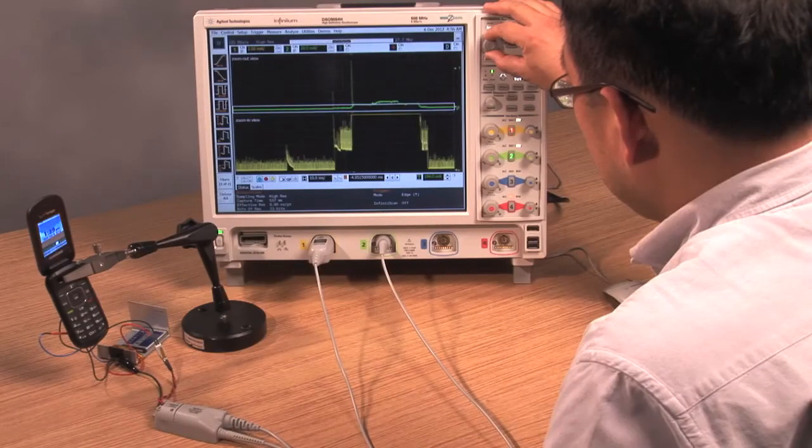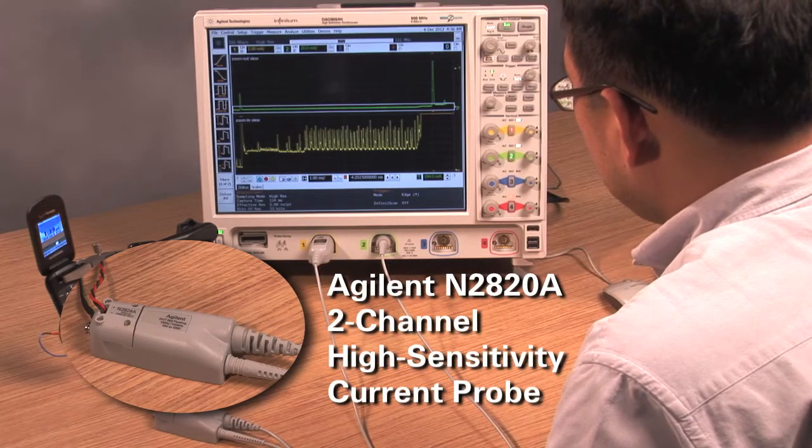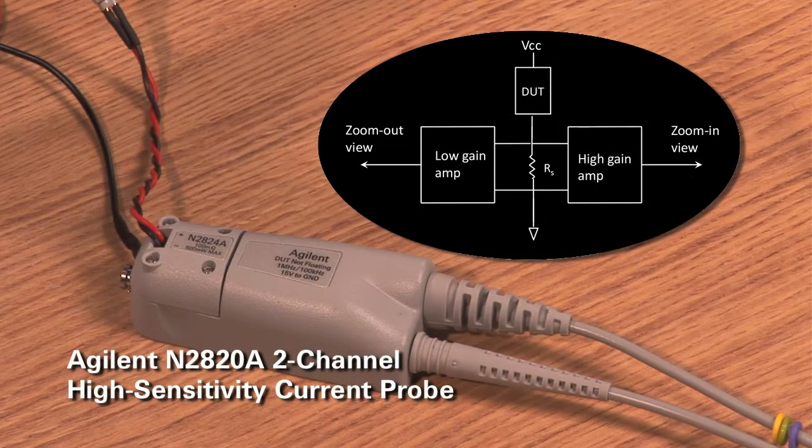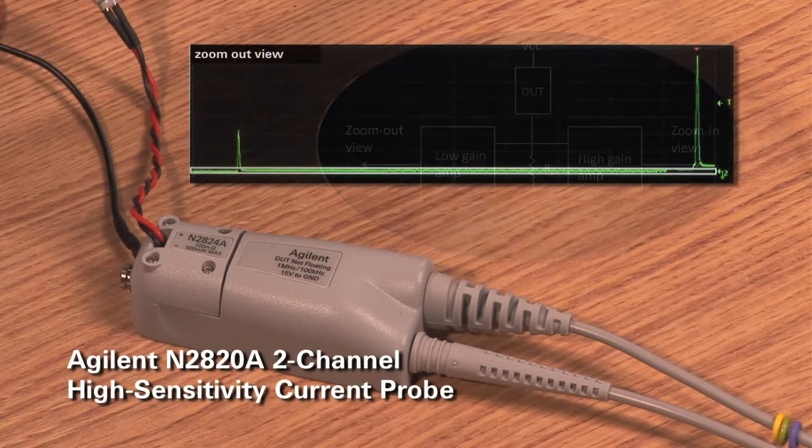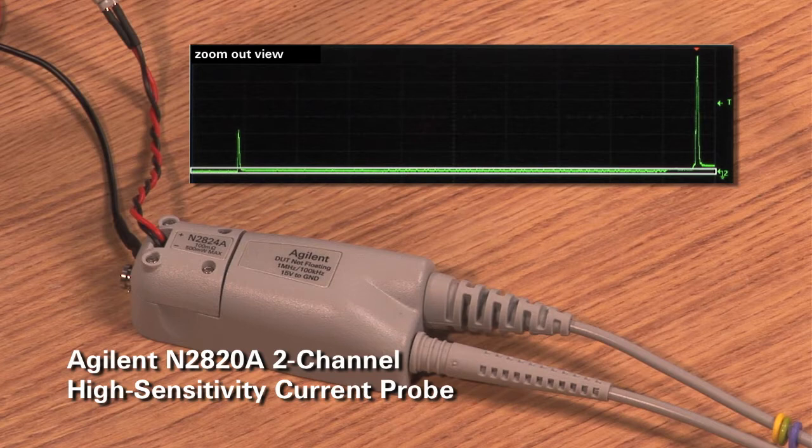Now, let's try the same measurement with Agilent's N2820A two-channel high-sensitivity current probe. This probe comes with two parallel differential amplifiers with different gain settings. The low gain side allows you to see the entire waveform or the zoom out view of the waveform.